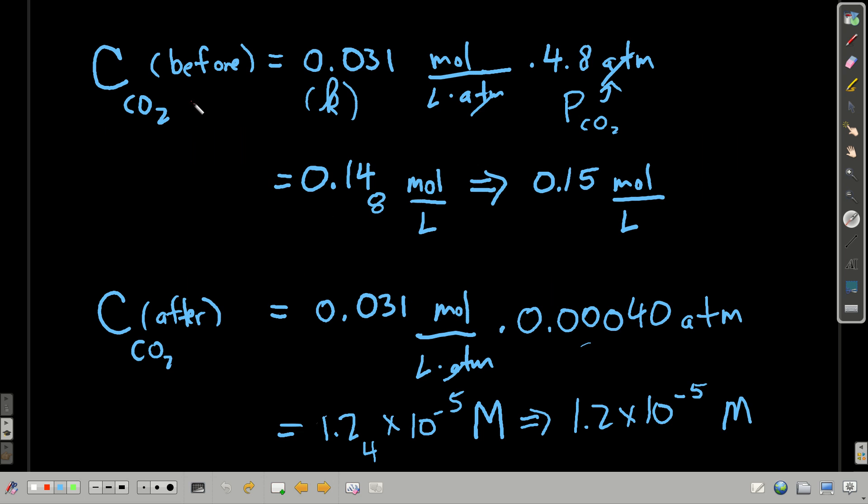So, before we open the bottle, we take Henry's Law constant, this is the K, times the partial pressure of the carbon dioxide above it, which is 4.8 atmospheres. Multiply them together and we get 0.148 moles per liter, two sig figs to get 0.15 moles per liter.